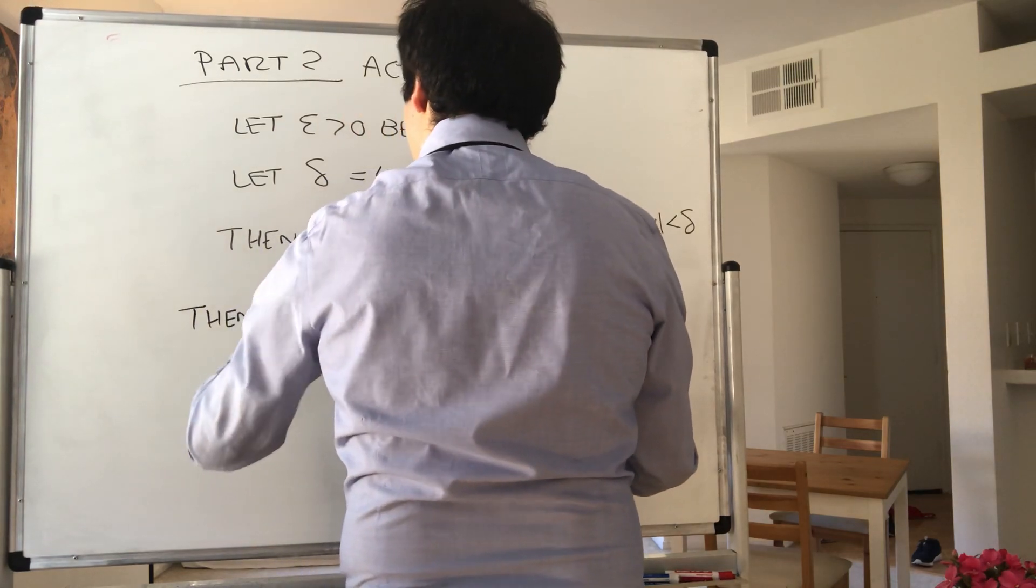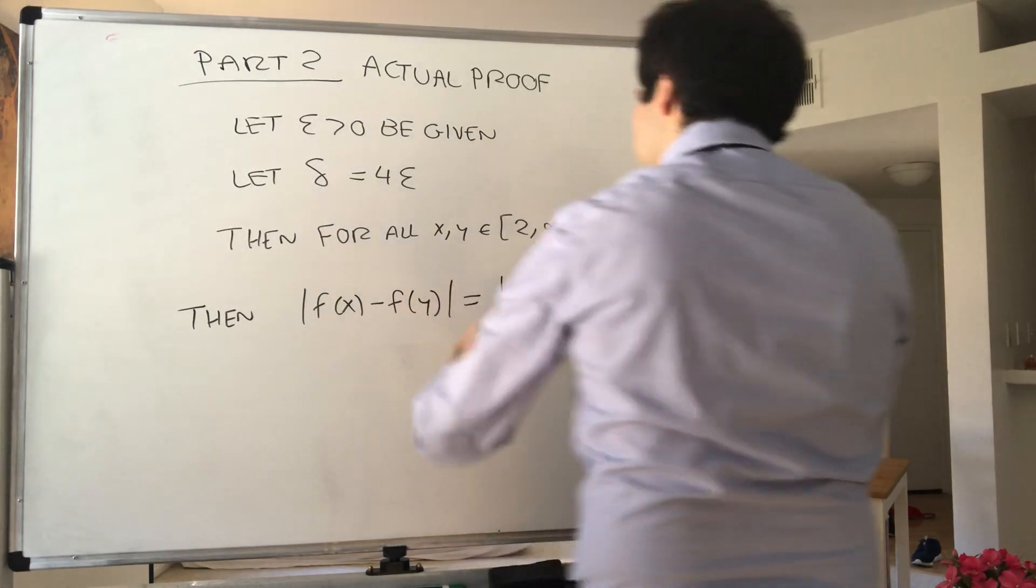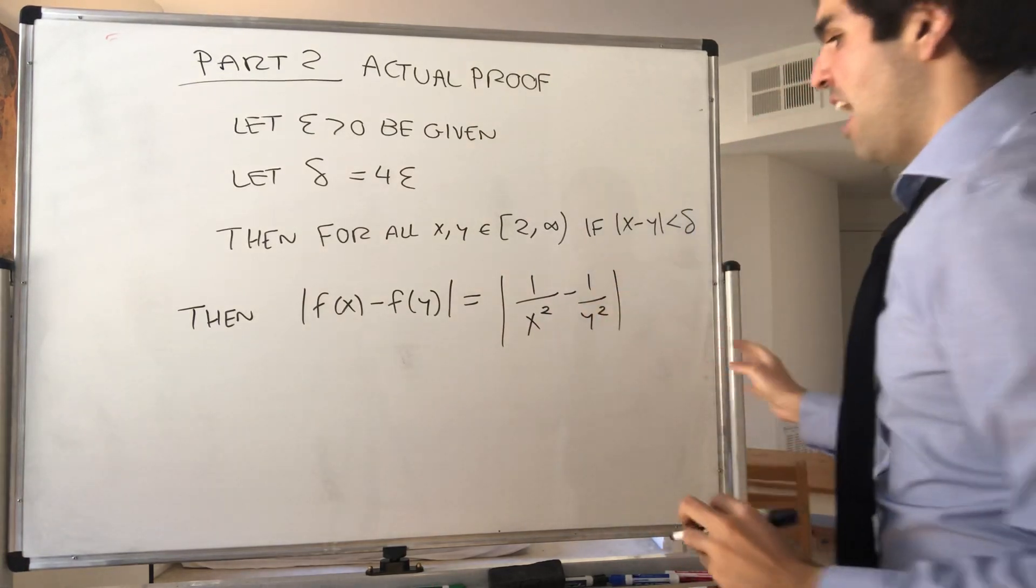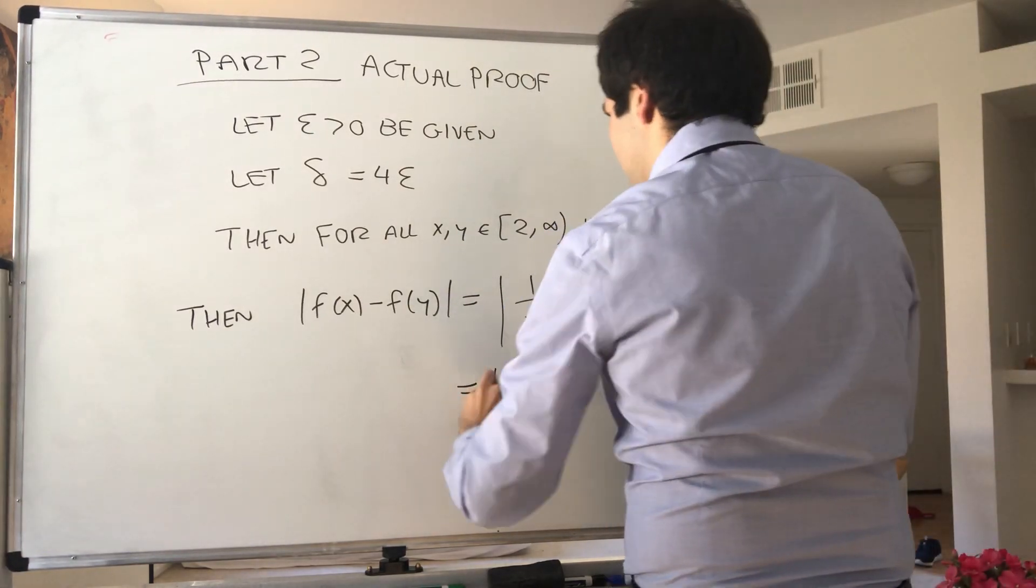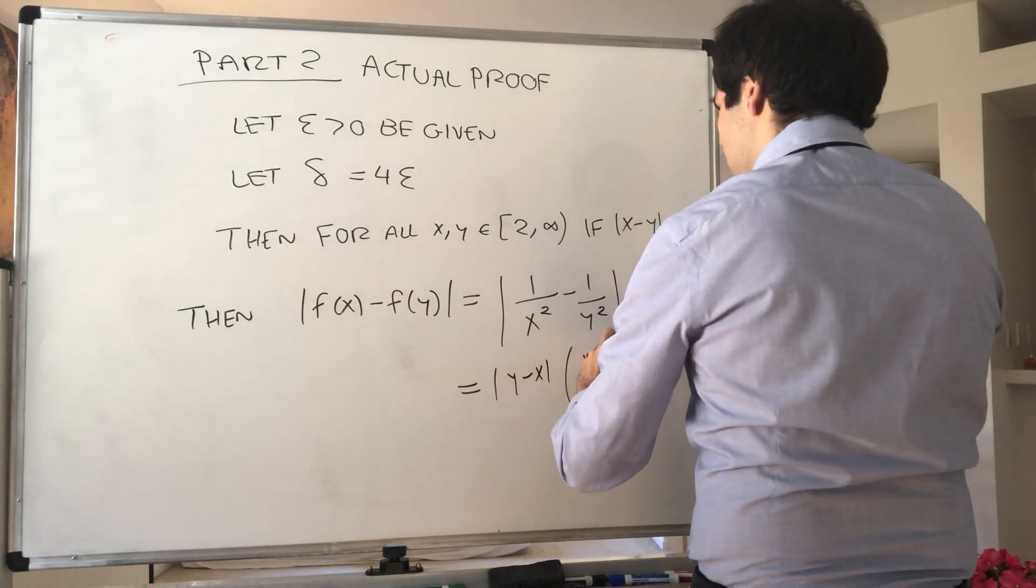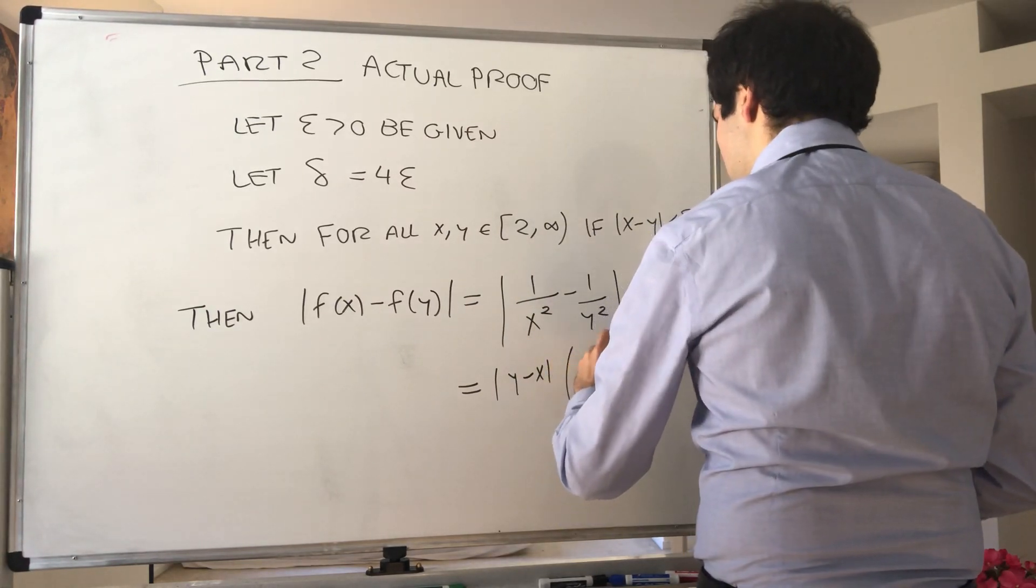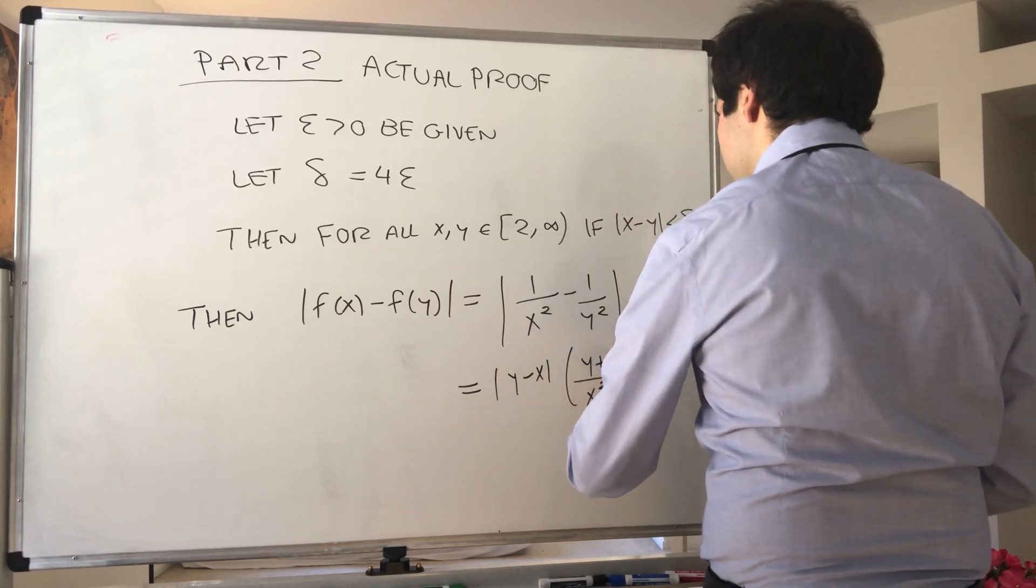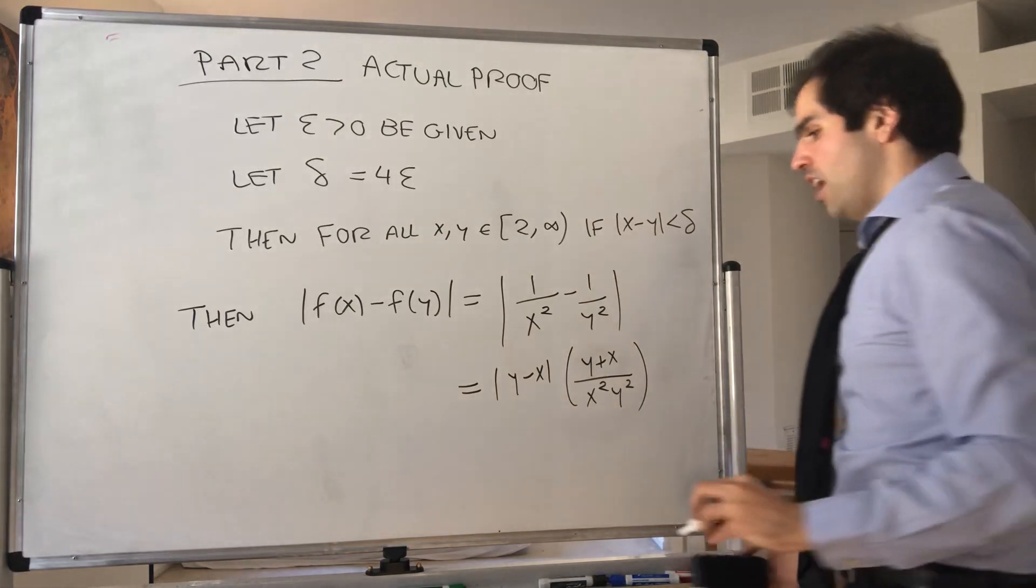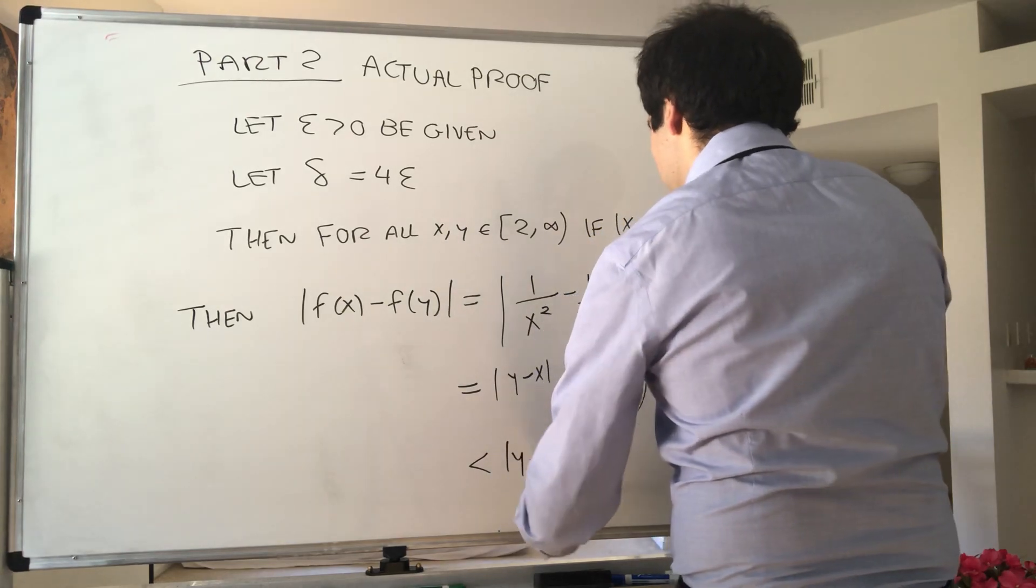Then f of x minus f of y, that is, 1 over x squared minus 1 over y squared. And then, we calculated that to be y minus x times y plus x over x squared times y squared. However, this term, remember, we estimated this to be less than 1 fourth. So this is less than or equal to y minus x times 1 fourth.